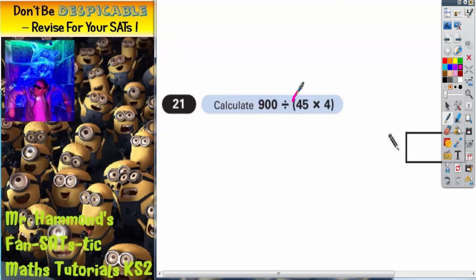Now the problem we've got here is that 45 times 4 is in a bracket, and we must always do brackets first, even if they don't come first in the question. So brackets have got to be done first.